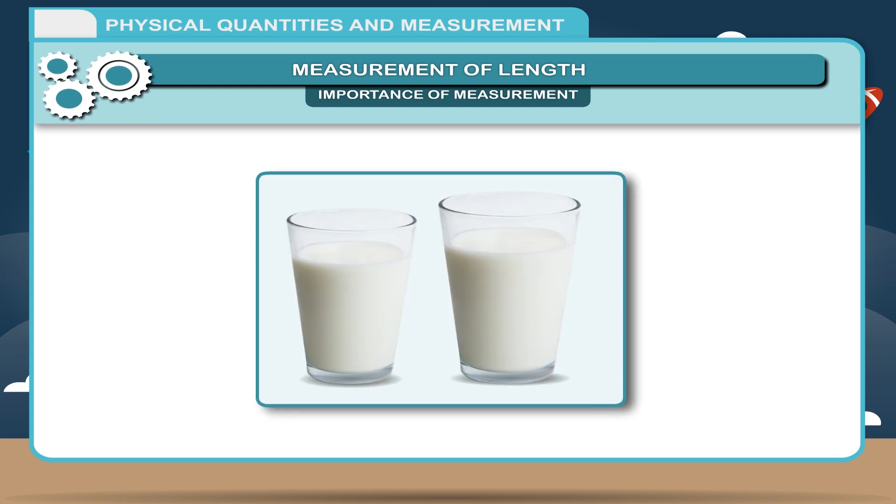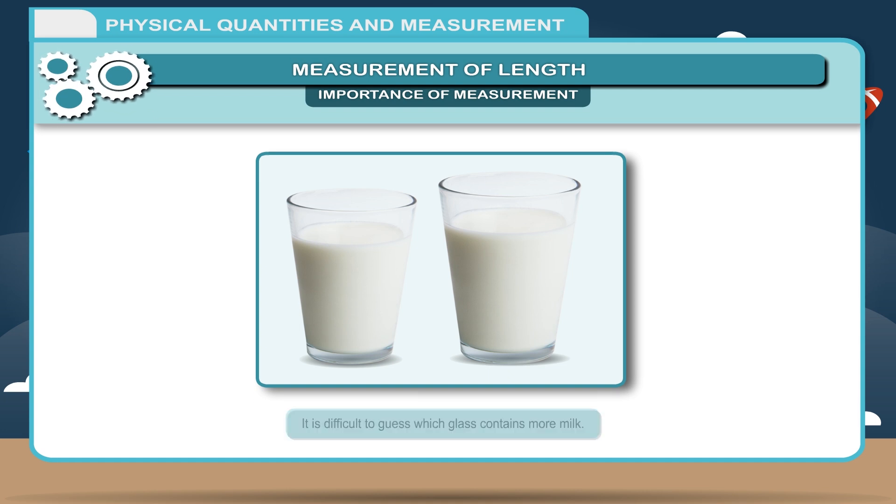Example 2: Two glasses containing milk are given below. In the above figure, two glasses contain milk. It is difficult to guess which glass contains more milk. We can only tell it with the help of measurement.